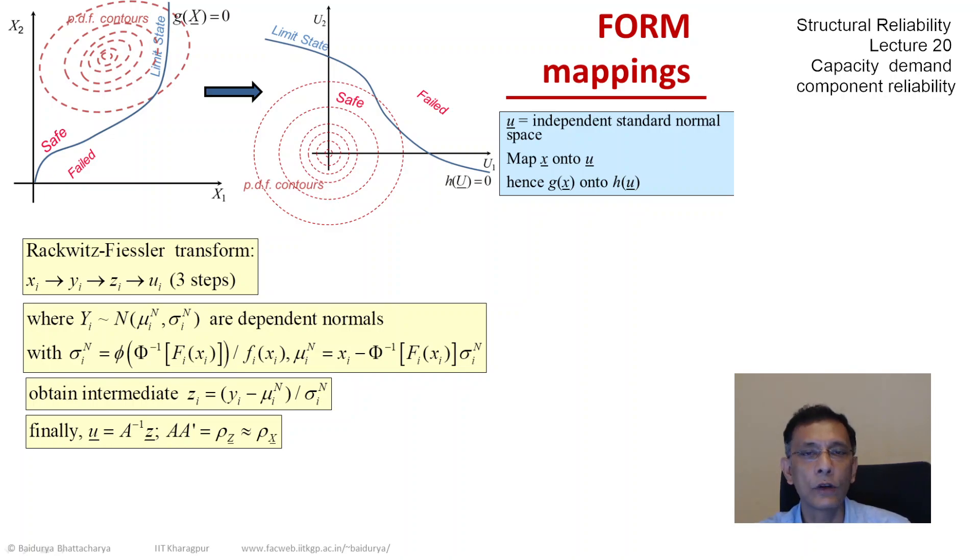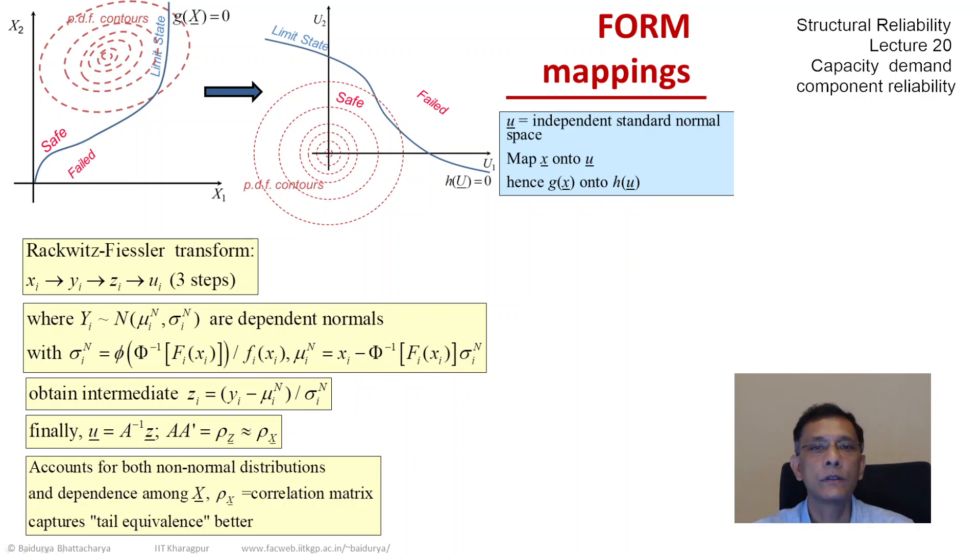Now whether we are talking about Roakwitz-Fiessler or Nataf, it's not necessary that ρ has to be there. We could very well apply Nataf and Roakwitz-Fiessler transformations if the x's were independent, but they do give us an opportunity of imposing a partial measure of dependence between the x's. To summarize, this Roakwitz-Fiessler transformation can capture the tail equivalence better, although it introduces a certain amount of computational burden, an extra step in the process.